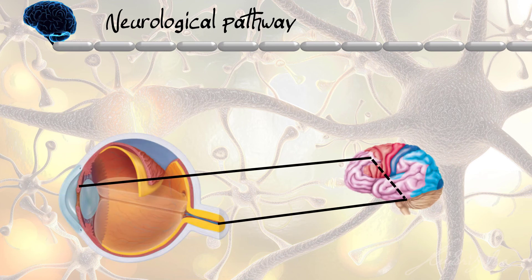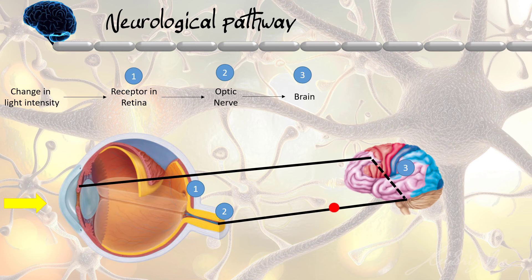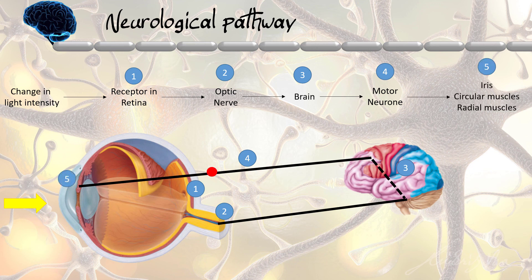Looking at the neurological pathway: there is a change in light intensity. The receptors in our retina — which you will learn about in the next video — will sense the change in light intensity. The optic nerve, which is the sensory neuron, carries action potentials to our brain, where the relay neuron is located. The brain transmits information to the motor neuron, which transmits nerve impulses to the iris, whereby the circular muscle and radial muscle perform the appropriate contraction and relaxation. That is all for the pupil reflex action.